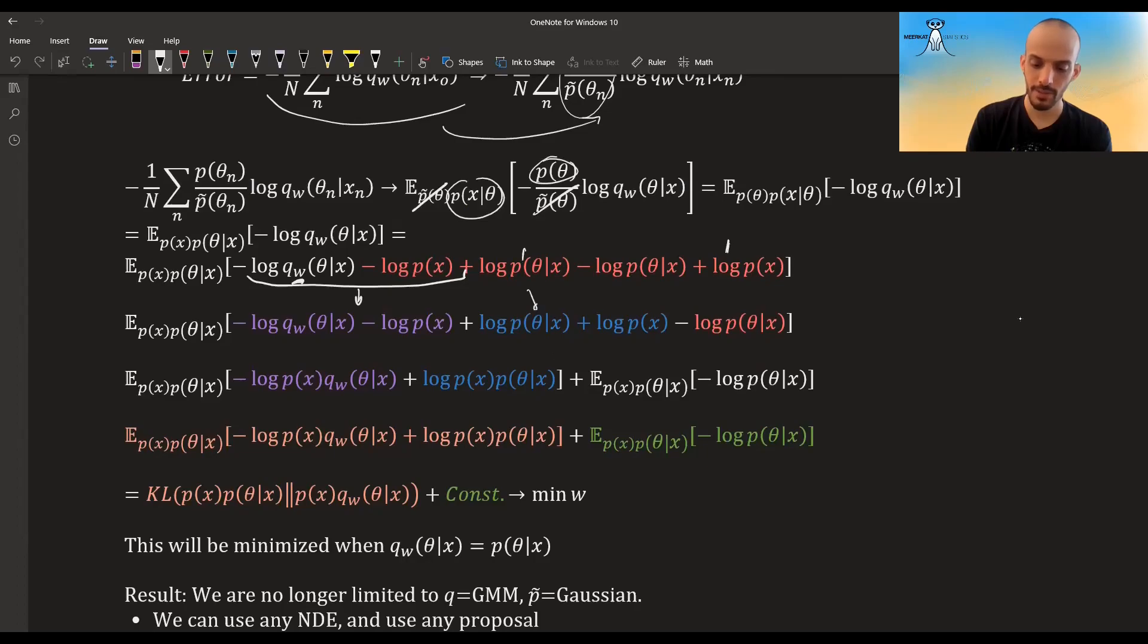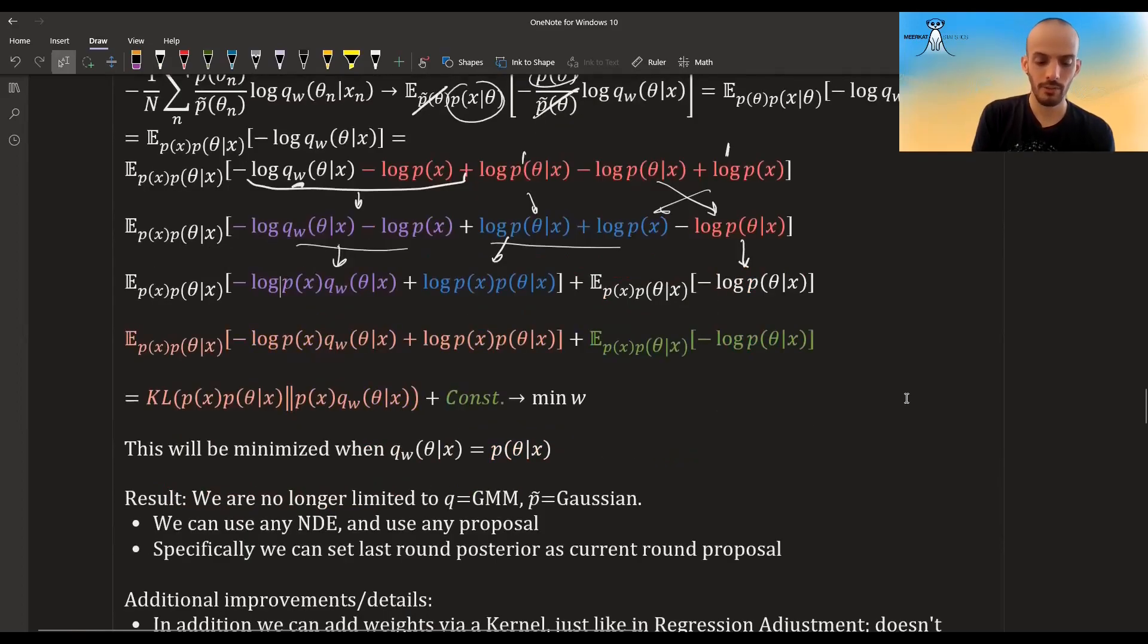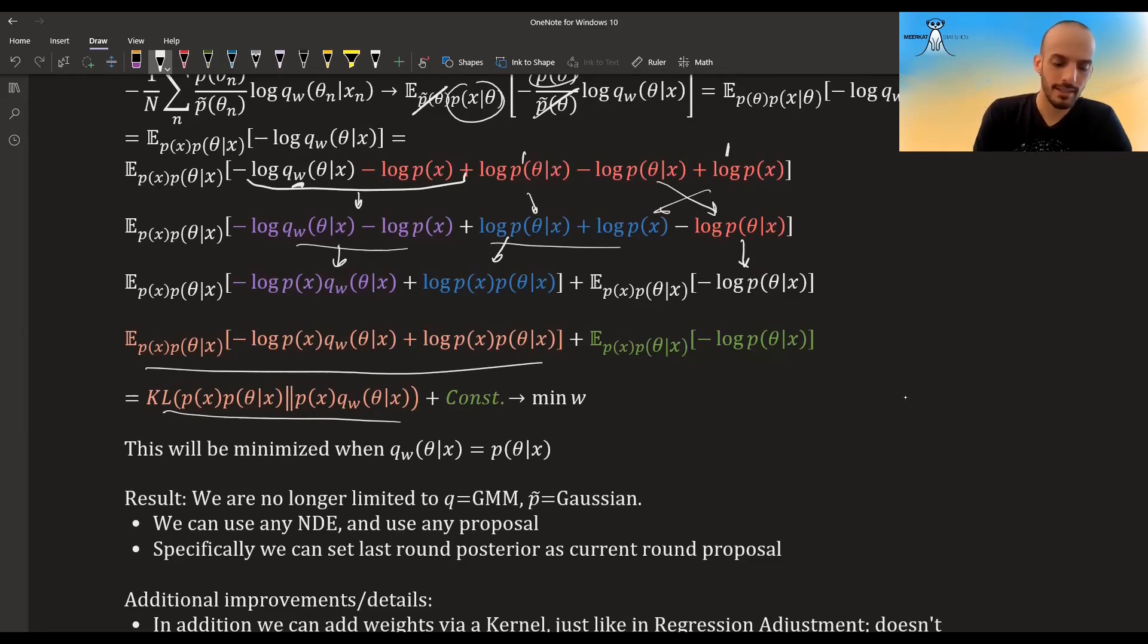So this and this cancels out, and this and this cancels out, but I want to add them just for the sake of it. Also all these terms don't depend on the w's that we are optimizing of the neural network. Let's take these two terms and put them in purple, let's take these two terms and put them in blue, and this term we can leave on this side.